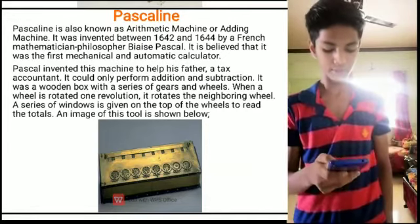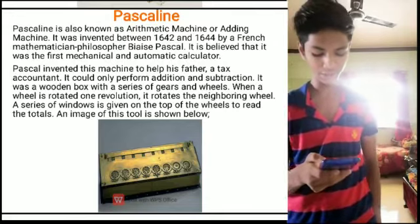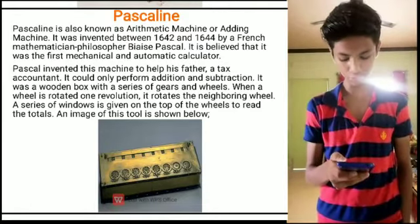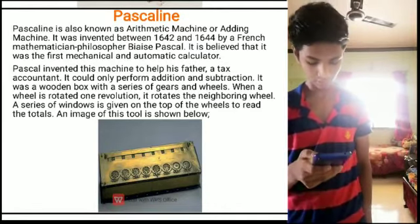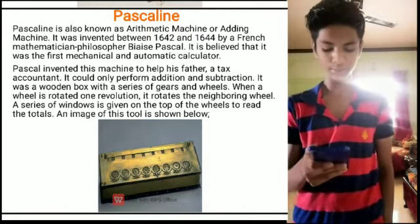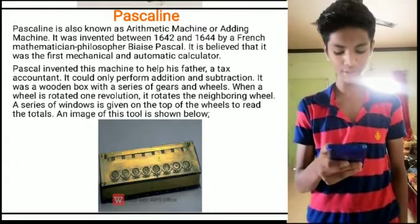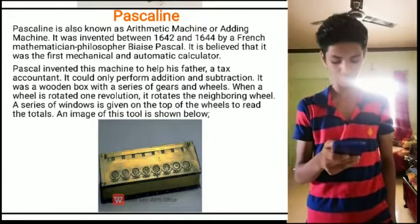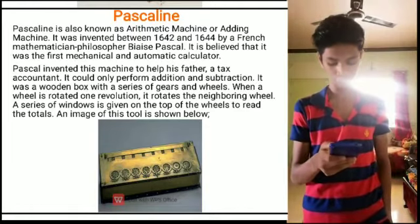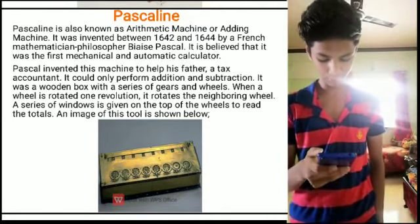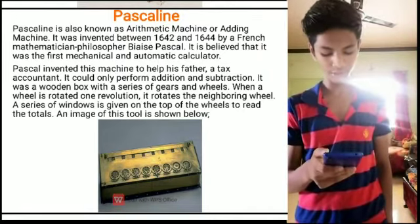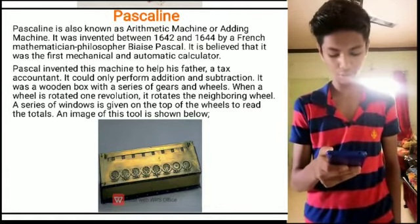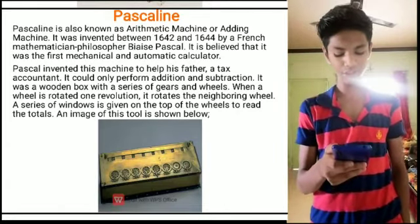3. Pascaline: Pascaline is known as the arithmetic machine or adding machine. It was invented between 1642 and 1644 by a Frenchman. It was the first mechanical and automatic calculator. Pascal invented this machine to help his father, a tax accountant. It could only perform addition and subtraction. It was a wooden box with a series of gears and wheels. When a wheel rotated one revolution, it rotated the neighbouring wheel. A series of windows on top of the wheels were used to read the totals. An image of this tool is shown below.